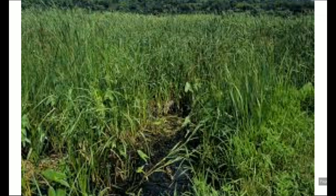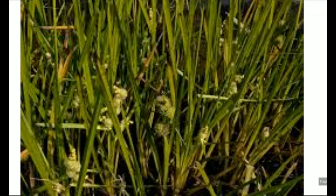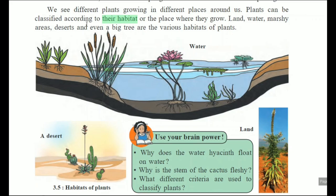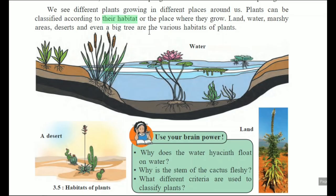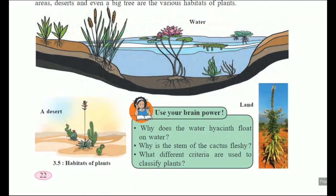Marshy areas are wet places where the soil always remains wet — that is what marshy area means. In deserts, dryness is more and water content is very less. Even on big trees, certain small plants and climbers grow. So these are the various habitats of plants — look at diagram 3.5.